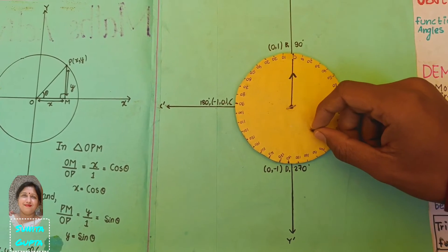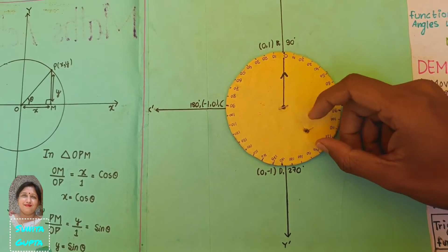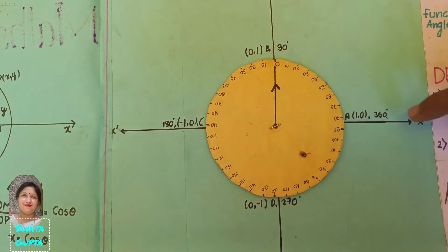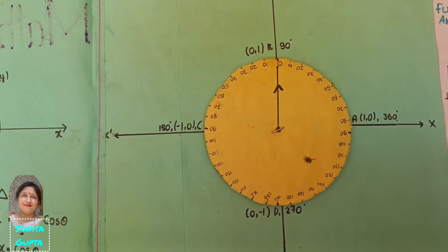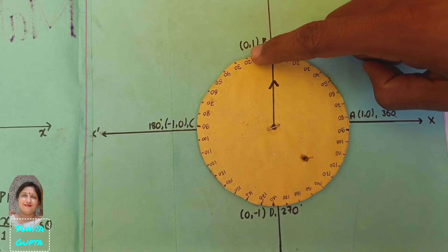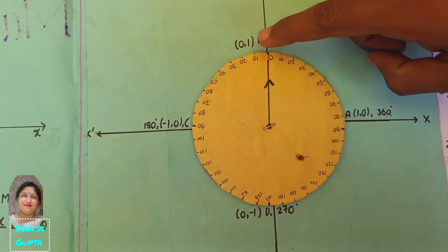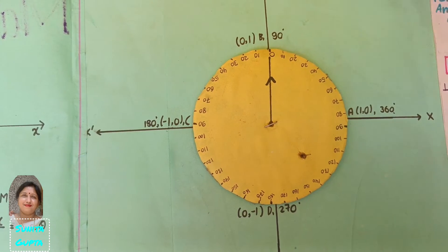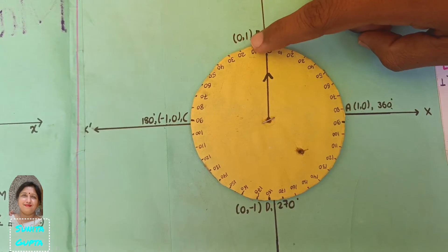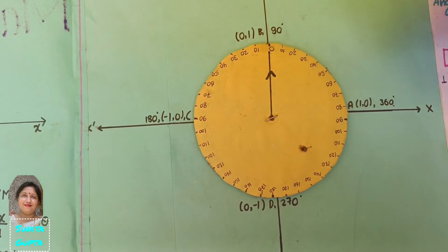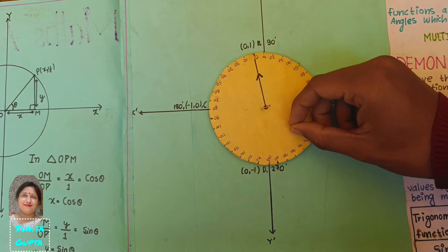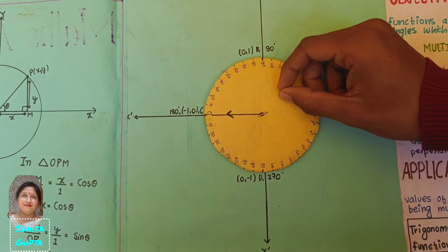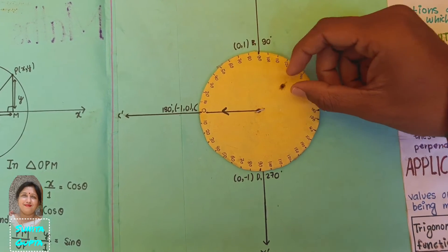Now let us take another point B(x, y) which is perpendicular to the X-axis and makes an angle of 90° with the X-axis. The X coordinate represents cos theta and the Y coordinate represents sin theta, which means cos 90° equals 0 and sin 90° equals 1. In the same way we can also find sin 180°, which equals 0.